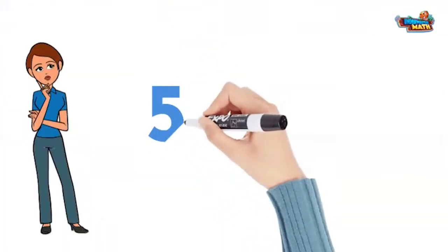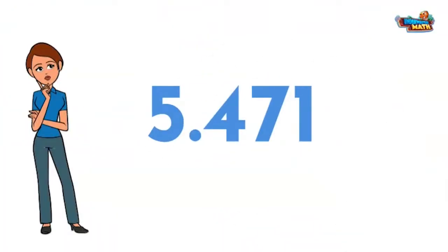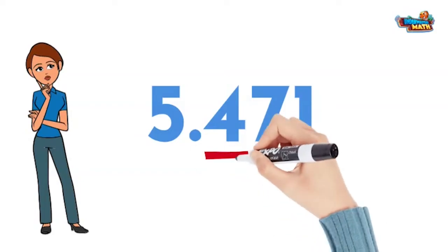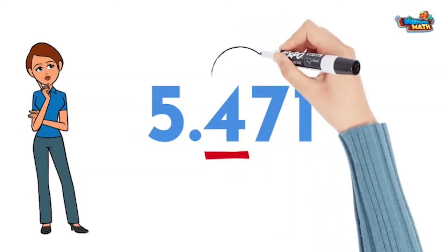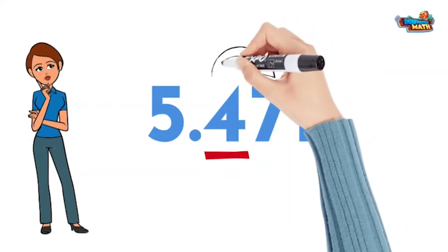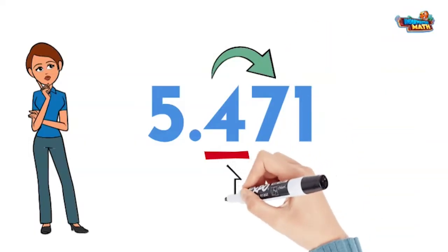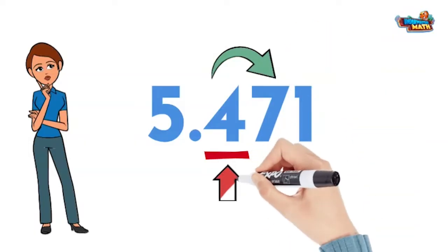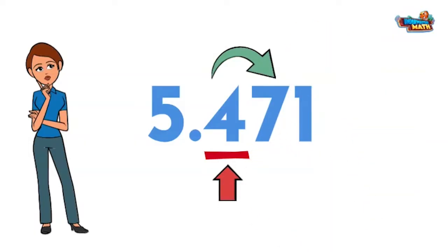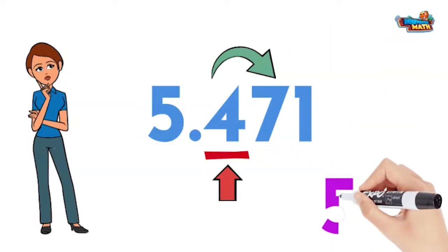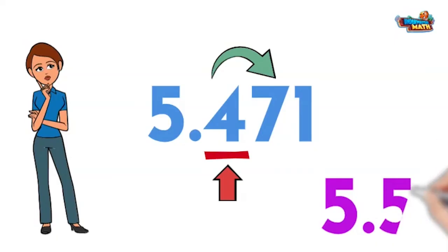To round the number five and four hundred and seventy-one thousandths to the nearest tenth, I will underline the four in the tenths place. I look to the right and see a seven. The seven is larger than five. Therefore, I will round the four in the tenths place up. I will get the answer of five and five tenths.